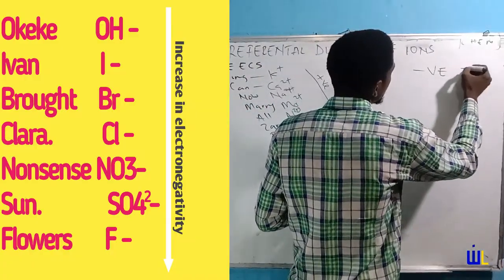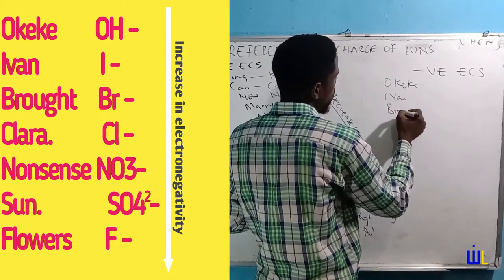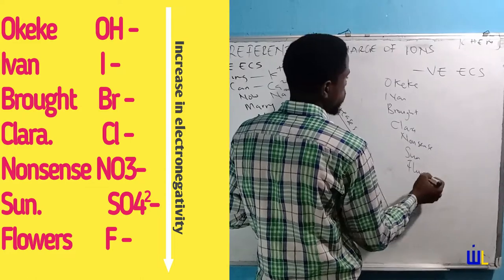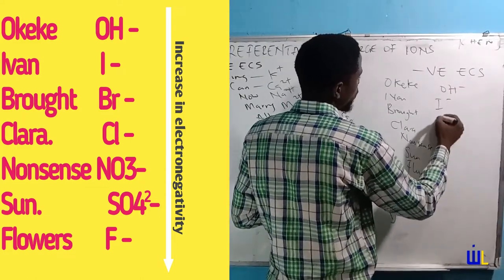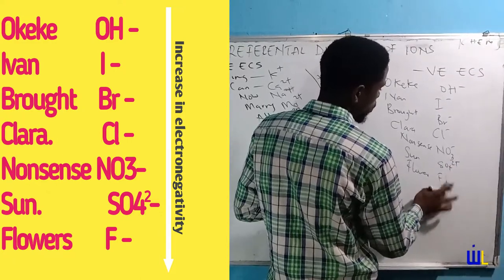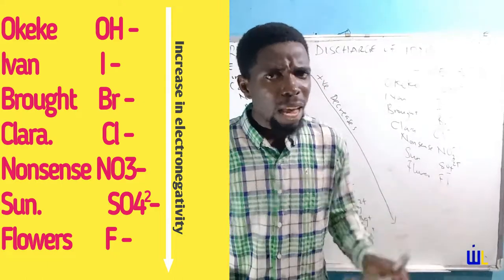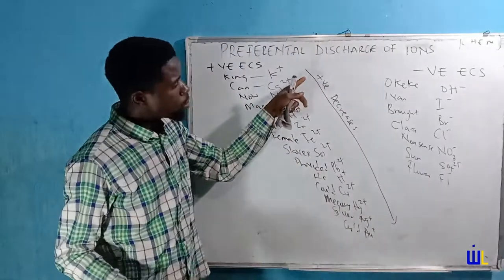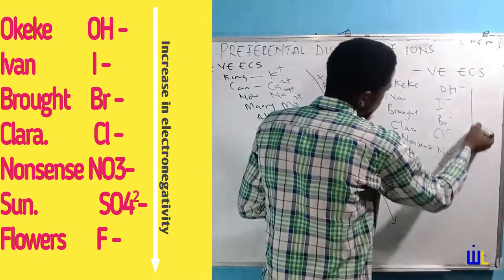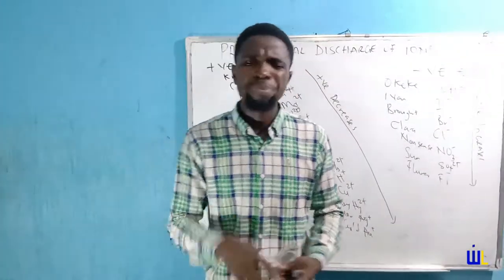For the negative ECS, the mnemonic is: 'OKK Ivan, Brut Clara, Nonsense Sun Flower,' representing Hydroxyl ion, Iodide ion, Bromide ion, Chloride ion, then Nitrate ion, Sulphate ion, and Fluoride ion. If electropositivity decreases from top to bottom for positive ions, then electronegativity increases from top to bottom for negative ions. So negative electronegativity increases while positive electropositivity decreases, both going from top to bottom.